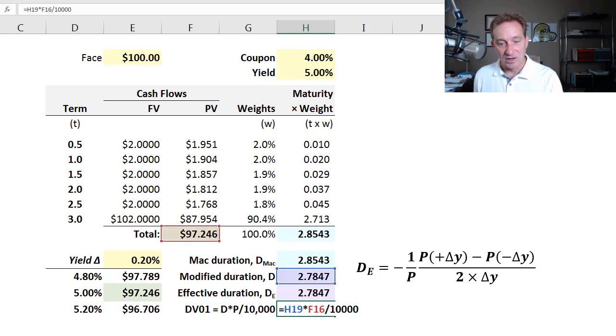We always have access to the effective duration if we can perform this repricing exercise. And then finally here, I have the dollar value of the price value of basis point or DV01, which just takes the duration, modified duration, multiplies by the price. And when I do that, I'm actually getting what's over here. This fraction, I'm getting the dollar duration, the slope of that secant or tangent line on the price yield curve.